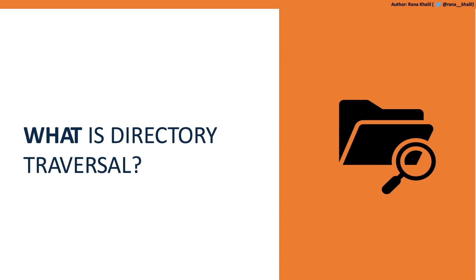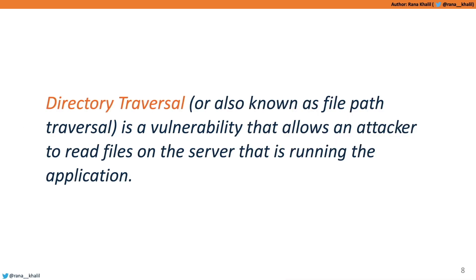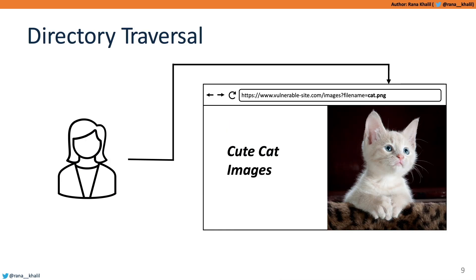Let's get started with the first section: what is directory traversal? Directory traversal, also known as file path traversal or just path traversal, is a vulnerability that allows a malicious actor to read files on the server that the application is running on. Imagine you have an application that allows you to view cat images. It makes a GET request to the backend server taking in the file name of the image. The issue is if this file name is user-controllable — coming from the client side — and not validated in the backend, then you could view any file on the system.